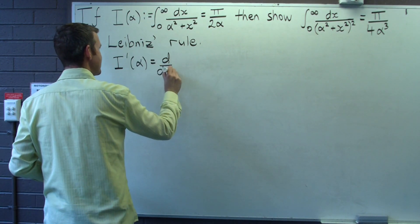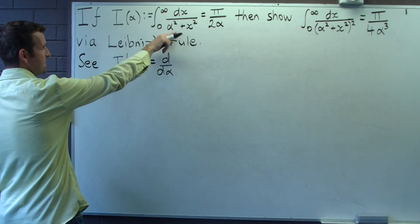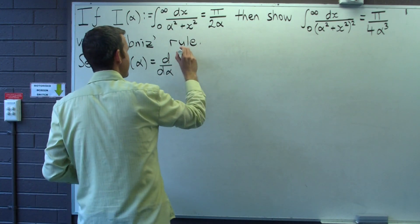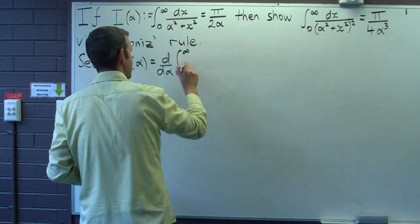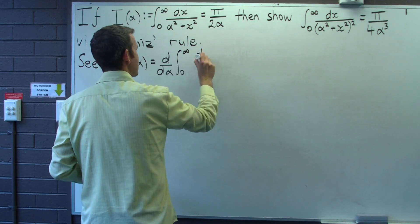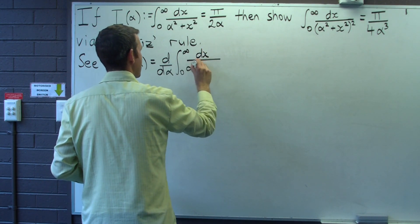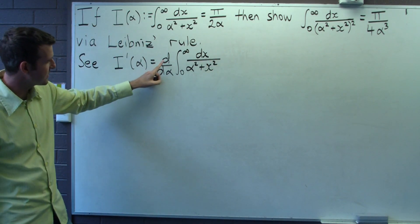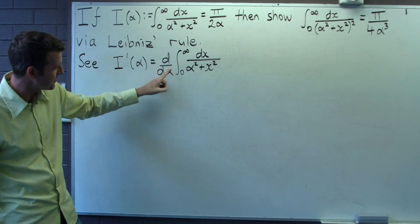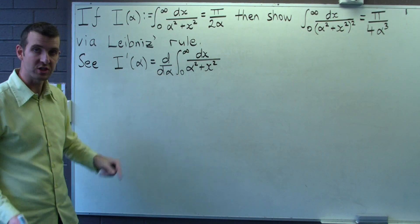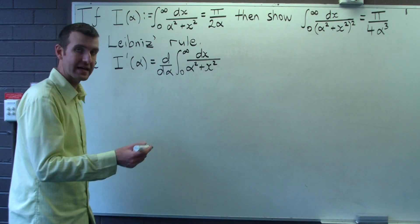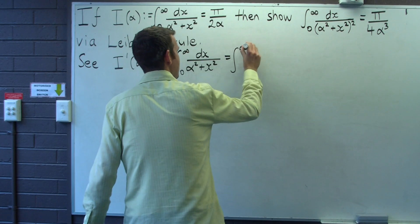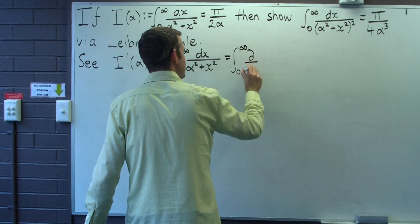I'm going to differentiate here and use Leibnitz's rule. Leibnitz's rule says that we can shift the d/dα inside the integral sign and switch to partial derivatives. That's all Leibnitz's rule says. So we switch to partials.